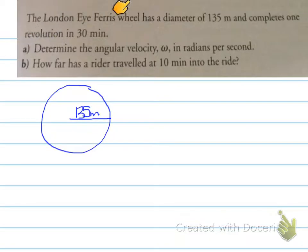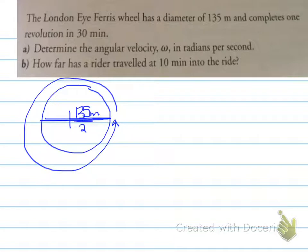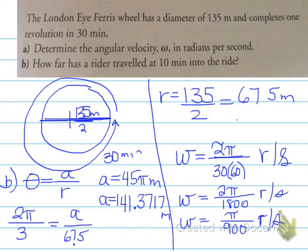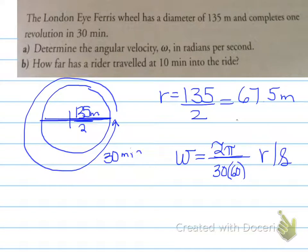So the London Eye Ferris wheel has a diameter of 135 meters and completes one revolution in 30 minutes. Determine the angular velocity in radians per second. So we need to know how much the angular velocity is in radians per second. This particular object has a radius of 135 divided by 2, but we need the angular velocity for part A. We have our radius. Let's talk about the angular velocity.